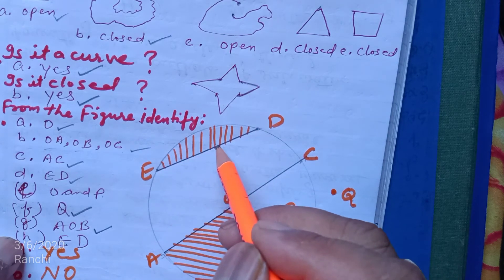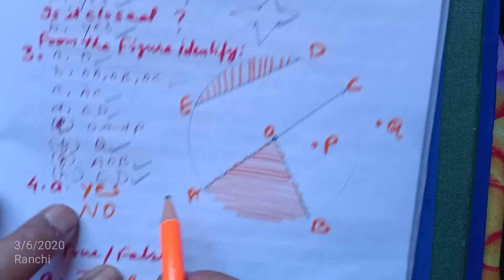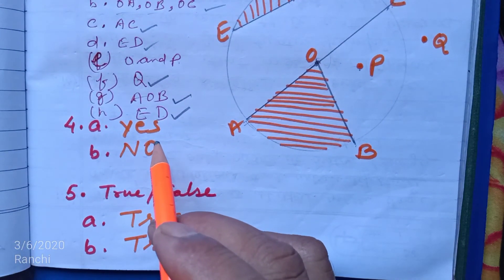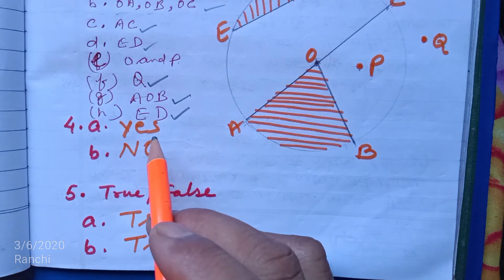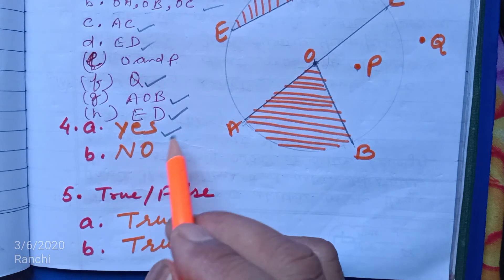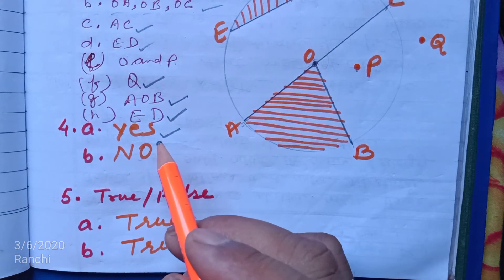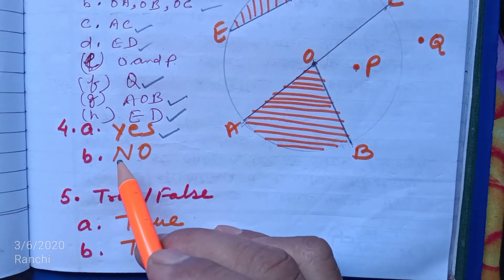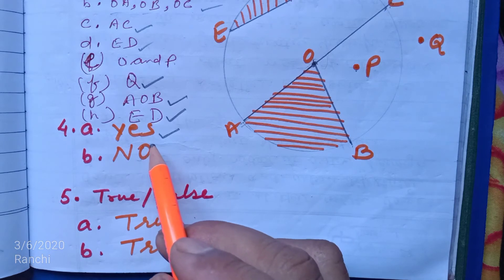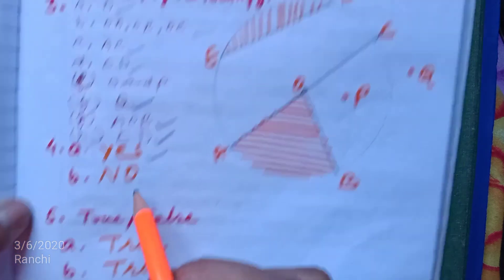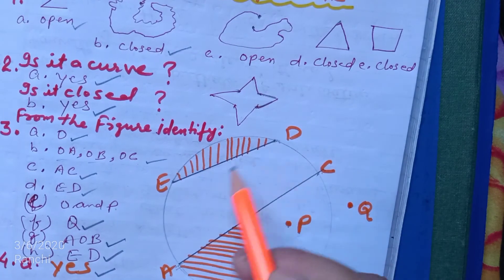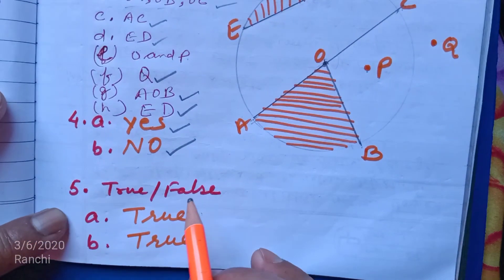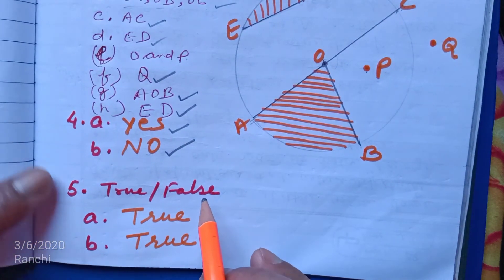Question number 4: Is every diameter of a circle also a chord? Yes, every diameter is the longest chord. I have repeated many times. Number B: Is every chord of a circle also a diameter? No.